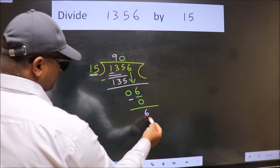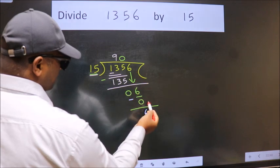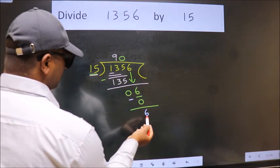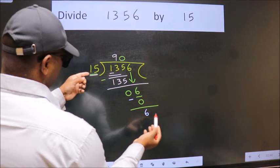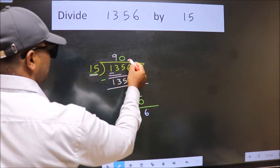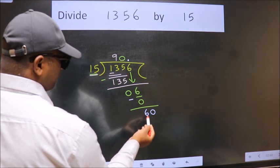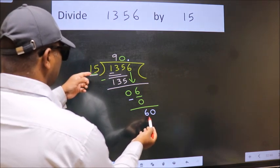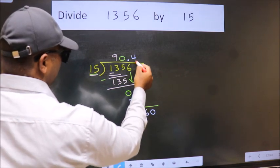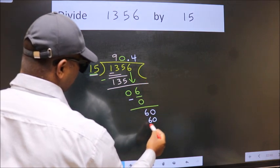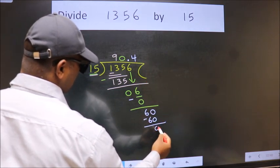Over here, we did not bring any number down, and 6 is smaller than 15. So now we can put a decimal point and write 0, making it 60. When do we get 60 in the 15 table? 15 times 4 equals 60. Now we subtract and get 0.